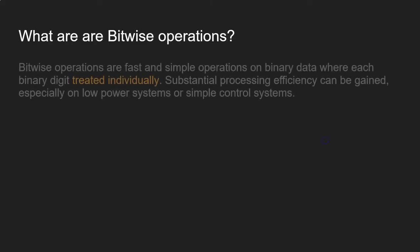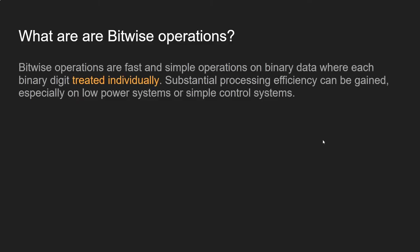So first of all, what are bitwise operations? These are fast and simple operations performed by the processor on binary data, where each binary digit is treated individually rather than being part of a larger number. Because of this, substantial processing efficiency can be gained, especially when using low power systems or simple control systems.